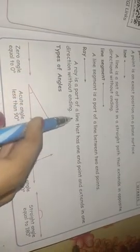Next, ray. A ray is a part of a line that has one end point and extends in one direction without ending.